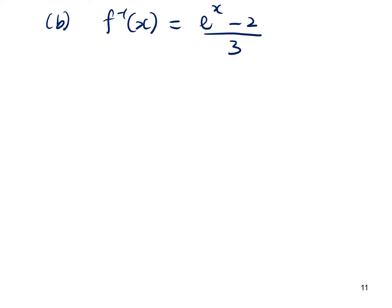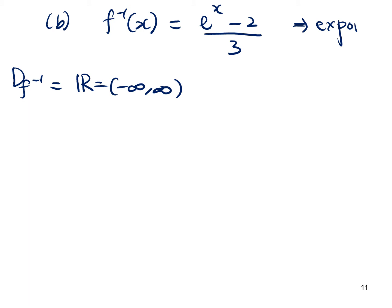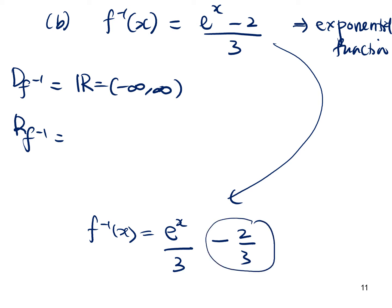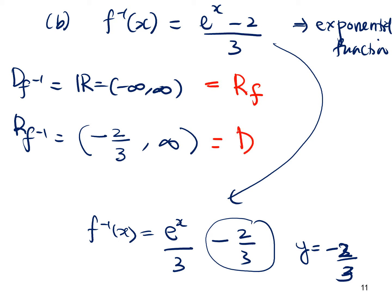The domain of f inverse is all real numbers, negative infinity to infinity, because it is an exponential function. The function f⁻¹(x) can be written as (eˣ/3) − (2/3), so the graph starts above y = −2/3, giving a range of (−2/3, ∞). From here: domain of f inverse equals range of f, and range of f inverse equals domain of f.